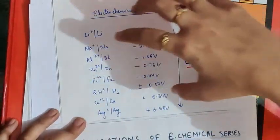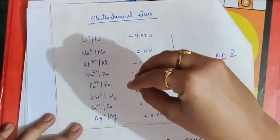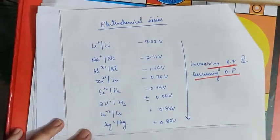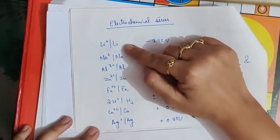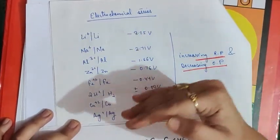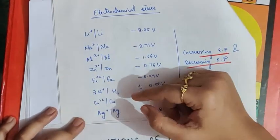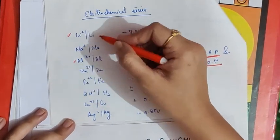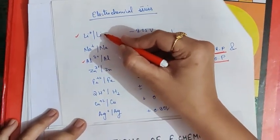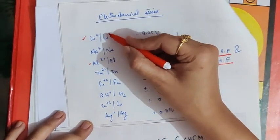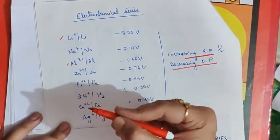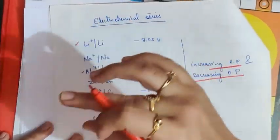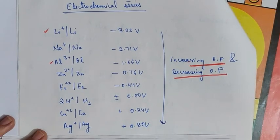In short, this series helps us identify which metal will behave as the anode and which will behave as the cathode when constructing a cell. Metals at the top of the series behave as the anode, and metals at the bottom behave as the cathode. For example, in a lithium-aluminum cell, lithium — being more electropositive and more reactive — will behave as the anode, and aluminum, present below lithium, will behave as the cathode.